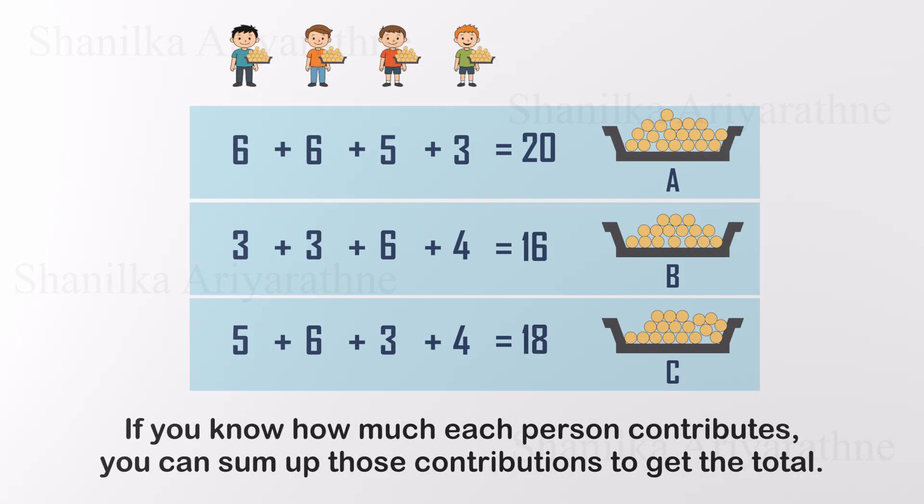The idea is simple. If you know how much each person contributes, you can sum up those contributions to get the total. Seems too easy, right? But that's exactly the magic behind the superposition theorem.